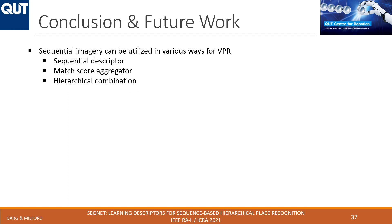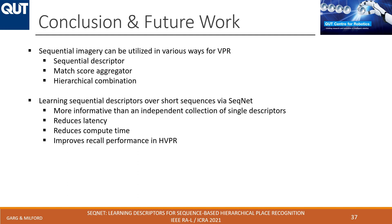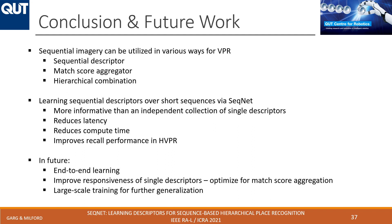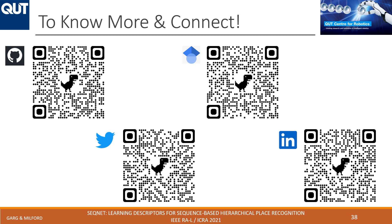To conclude, sequential imagery can be utilized in various ways — as a sequential descriptor, as a match score aggregator, or as a hierarchical combination. Learning sequential descriptors over short sequences not only reduces latency and compute time, but is also more informative than an independent collection of single descriptors, thus increasing recall performance. In future work, we will focus on end-to-end learning and improving robustness of single descriptors, possibly through large-scale training for further generalization. The source code is available on GitHub via the QR code shown. Thank you.